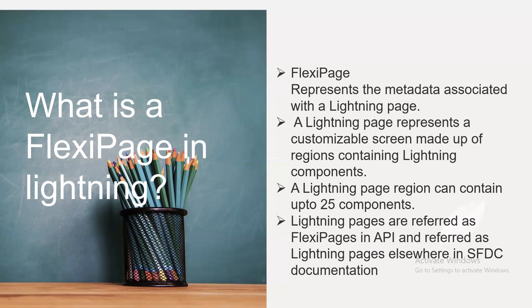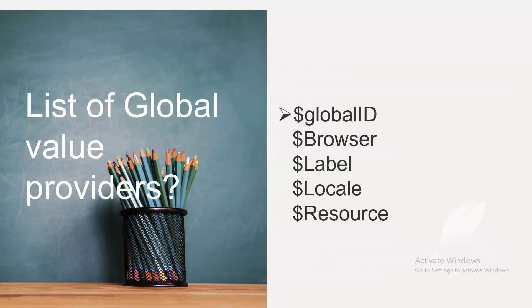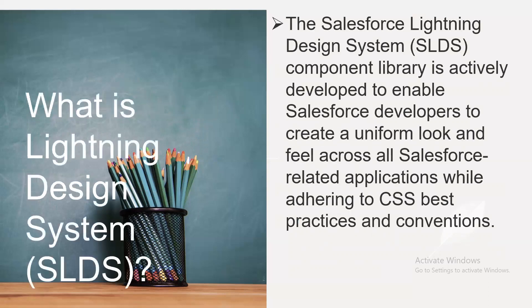What are the list of global value providers? The global value providers are: $globalID, $Browser, $Label, $Locale, and $Resources.